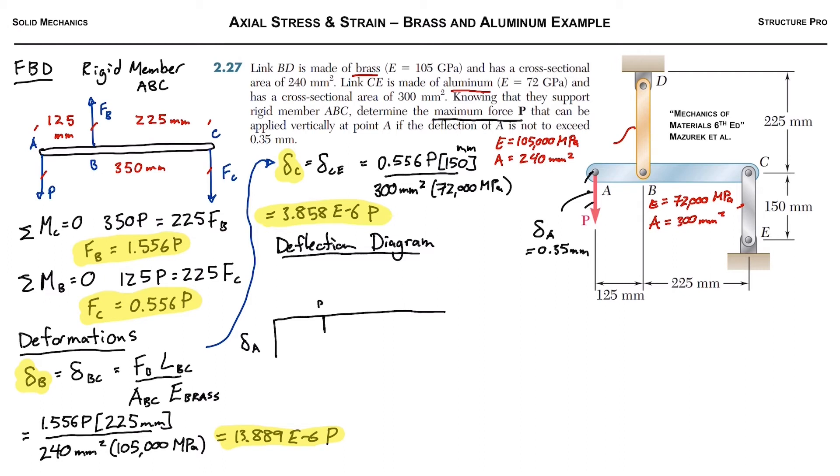We know that the actual member, ABC, will stay in a straight line. So we're going to draw a straight line here, and then we're going to label it. So we've got the deflection at A, the deflection at B, and the deflection at point C. And there's a straight line between them, and we're going to do some trigonometric magic right about here.